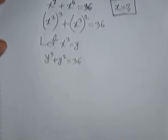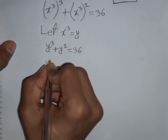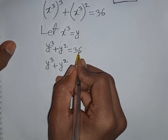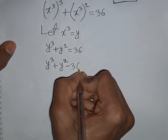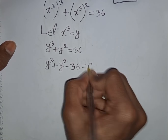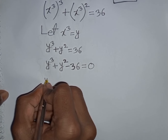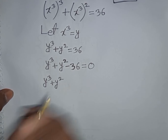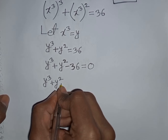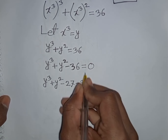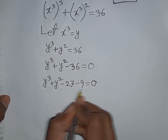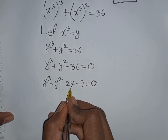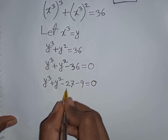We rewrite: y cube plus y square minus 36 is equal to 0. Now, minus 36 can be written as minus 27 minus 9. The reason is that the nearest cubic number to 36 is 27, so we split minus 36 as minus 27 minus 9. This gives us y cube minus 27 plus y square minus 9 is equal to 0.